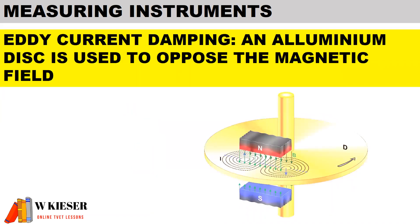Another form of damping is eddy current damping, also known as magnetic damping, and this uses an aluminum disc to oppose the natural lines of flux running from north to south.